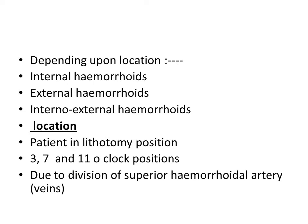Depending upon location, hemorrhoids can be divided into internal hemorrhoids, external hemorrhoids, or a combination — internal-external hemorrhoids. The patient is examined in the lithotomy position. Primary hemorrhoids are present mainly at three places: three o'clock, seven o'clock, and eleven o'clock. This is due to the division of the superior hemorrhoidal artery into two main divisions — right and left — with the right dividing again into anterior and posterior. There are two hemorrhoids on the right side and one on the left.